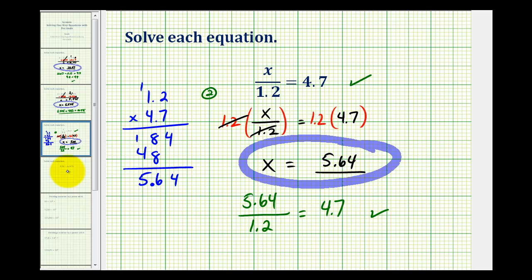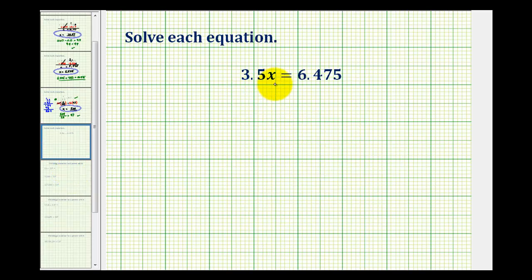Let's take a look at one more example. Here we have 3.5x equals 6.475. We need to remember here that 3.5x means 3.5 times x. So again, to solve for x, we need to manipulate the equation so it's in the form of x equals some number. And since we have 3.5 times x, here we'll have to divide both sides by 3.5 in order to isolate x. So 3.5 divided by 3.5, this would be 1 times x, or just x, and now we have to perform this division.